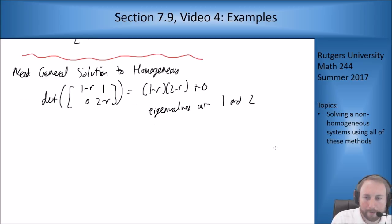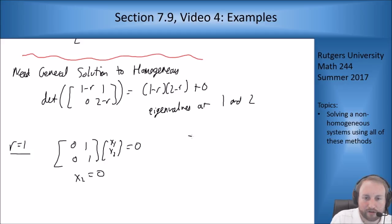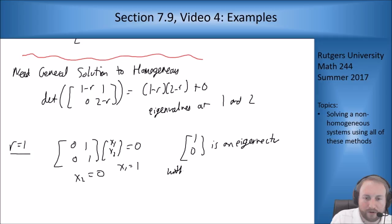Let's look at r = 1. So r = 1 means I want [0,1; 0,1] [x1; x2] = 0. This tells me that x2 has to be 0. So I can pick x1 = 1, and I get [1; 0] as an eigenvector with eigenvalue 1.